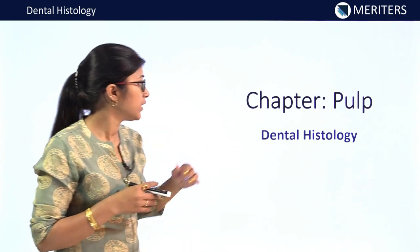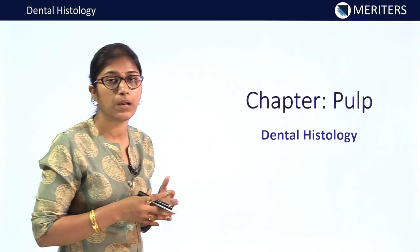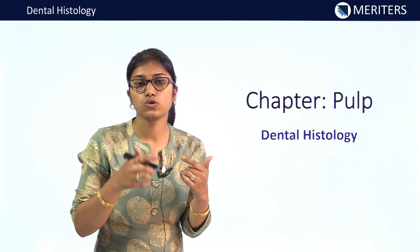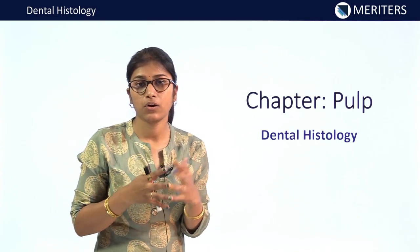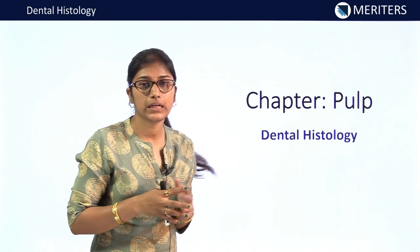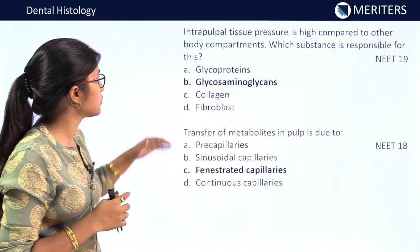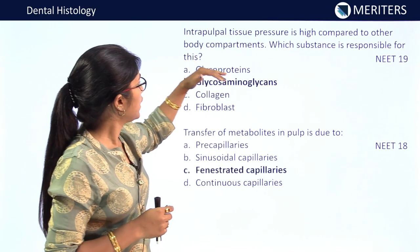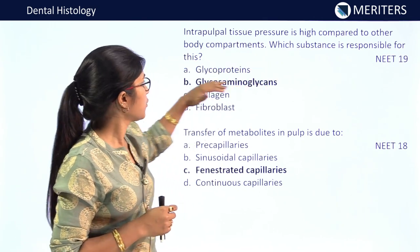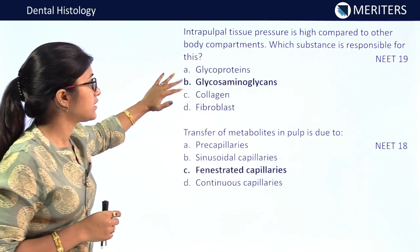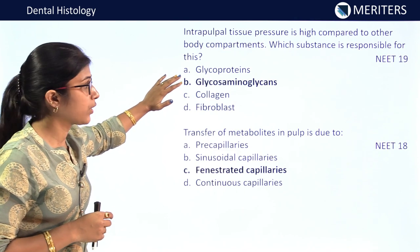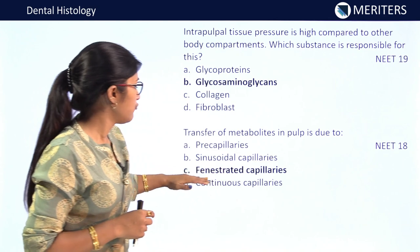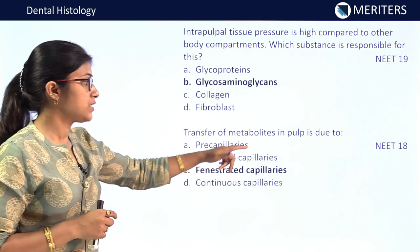Next chapter is pulp. Questions like zones of pulp are asked. Intrapulpal tissue pressure is high compared to other body compartments — the substance responsible for this is glycosaminoglycans — appeared in NEET 2019. Transfer of metabolites in pulp is due to fenestrated capillaries — NEET 2018.